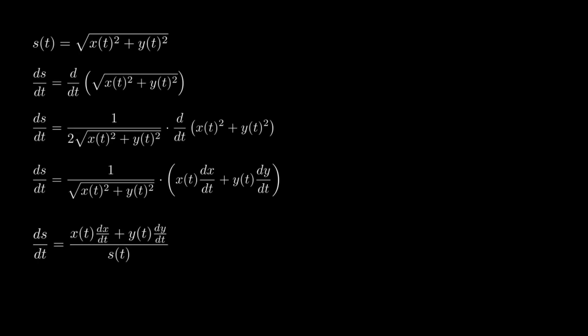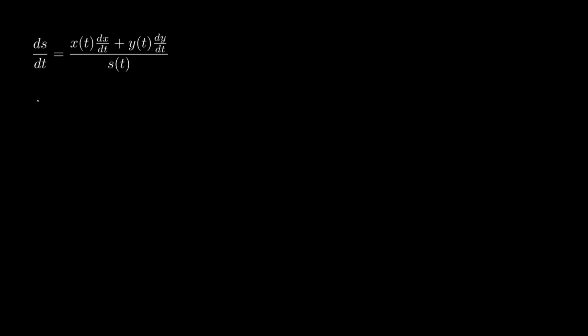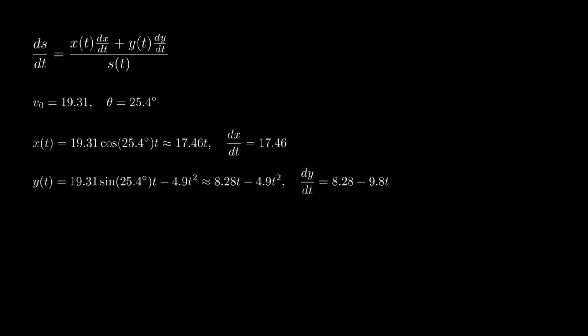Now let's actually calculate the speed from the quarterback to the ball over our time. We already know that Mendoza threw with a speed of about 19.31 meters per second at a 25.4 degree angle. We break this up into its components and plug in expressions for position and velocity. This gives us the full equation for how the distance between the quarterback and ball changes every second.